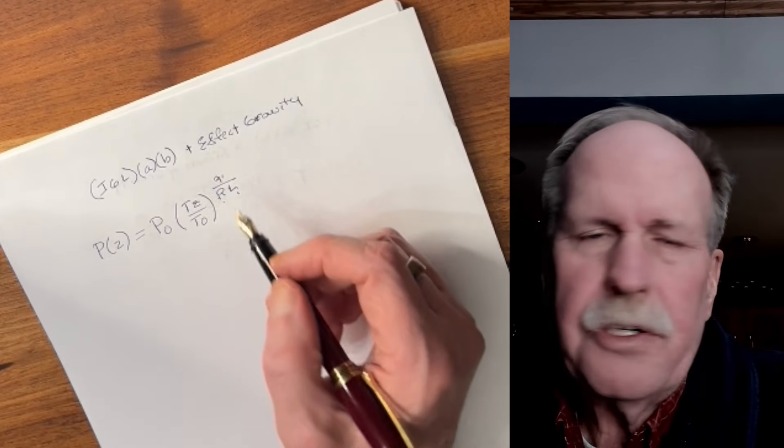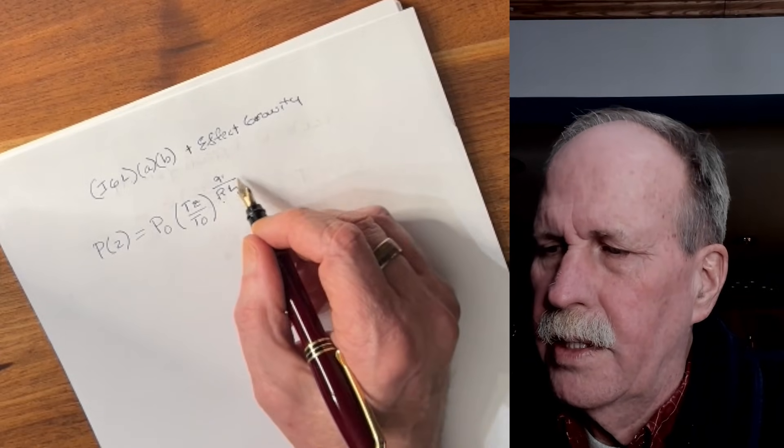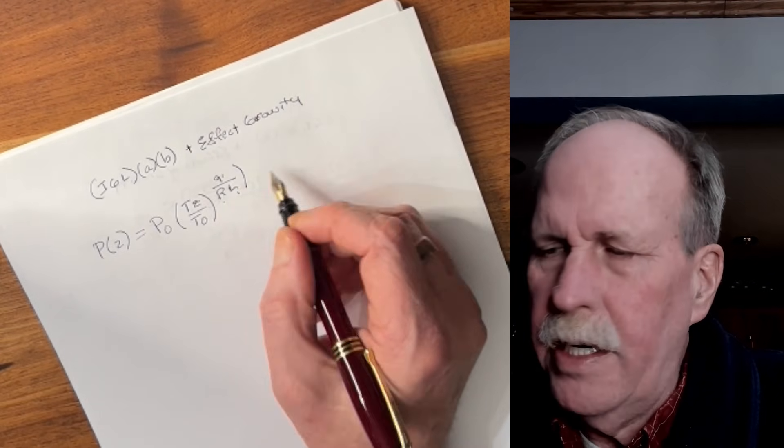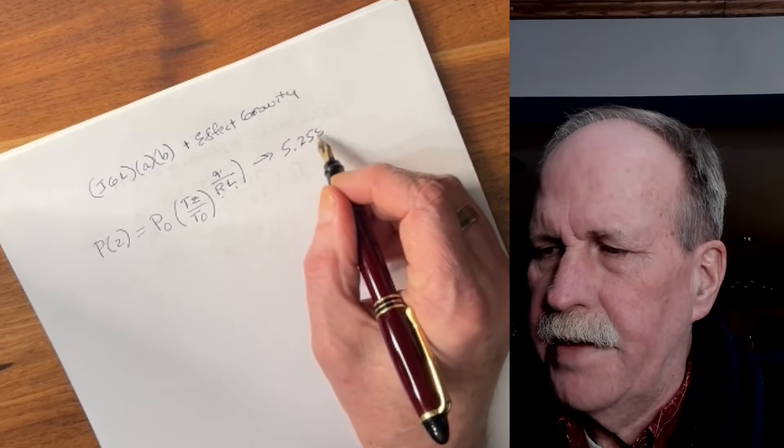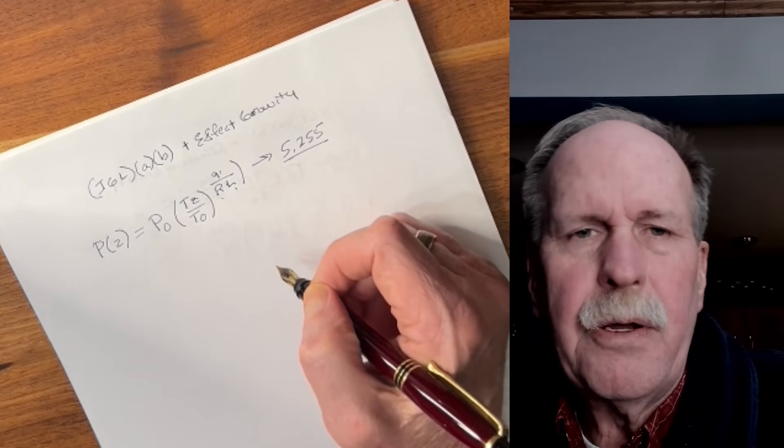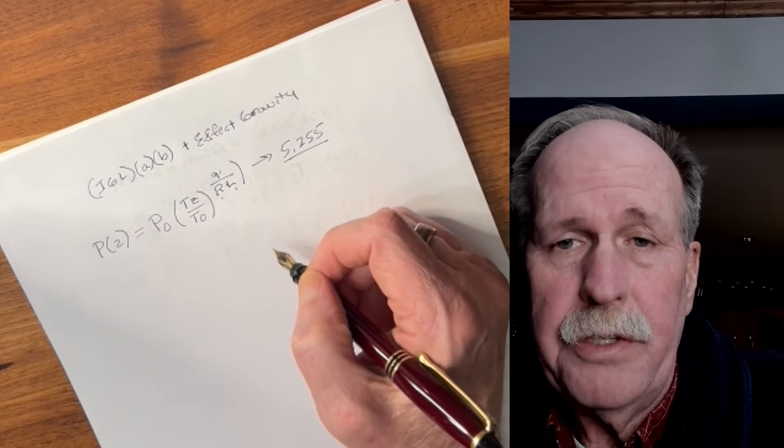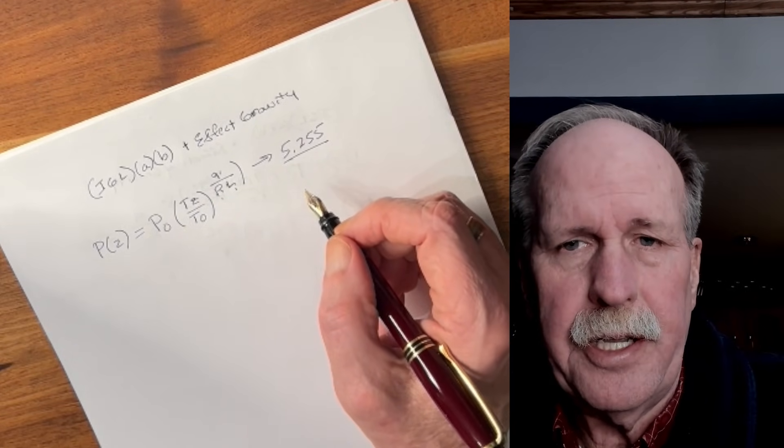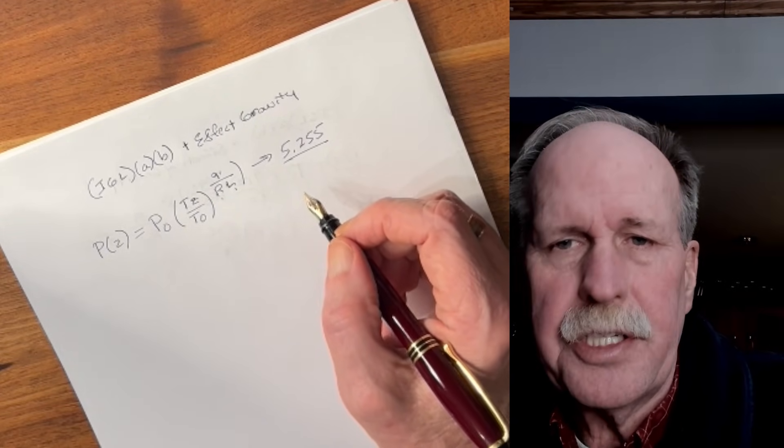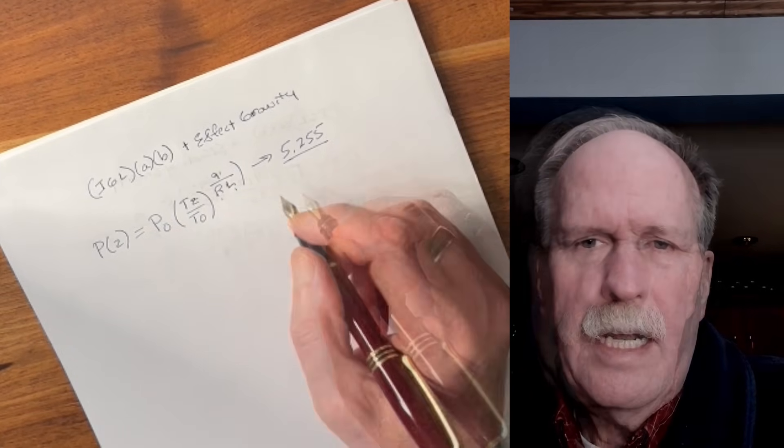Now, the interesting thing about this is these are all constants. So if we just take this little part right here and do the math for that, we get 5.255. So that exponent equals 5.255. And that depends on the gravitational attraction of the Earth, the characteristics of our atmosphere, and the lapse rate of the atmosphere. Now, if you guys would like, I'll go ahead and I'll put that value in for Mars and Venus, because they're different. And I'll stick that in the comments. Just ask me about it, and I'll go ahead and respond.